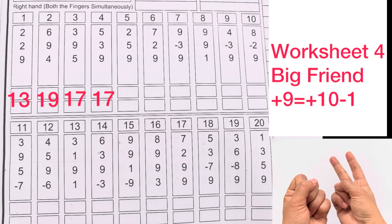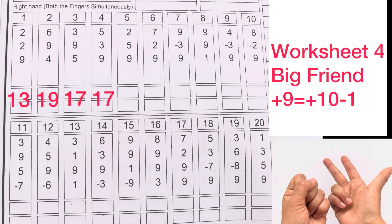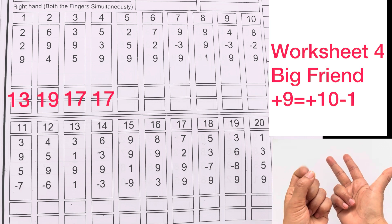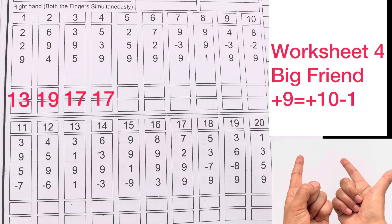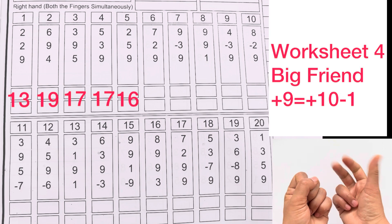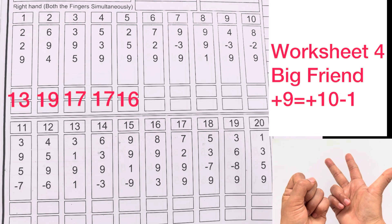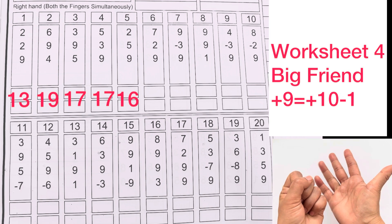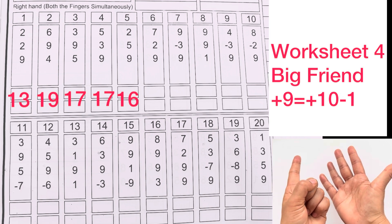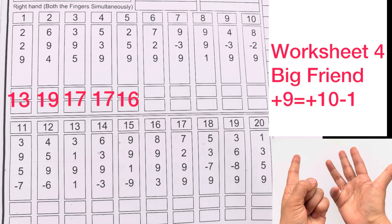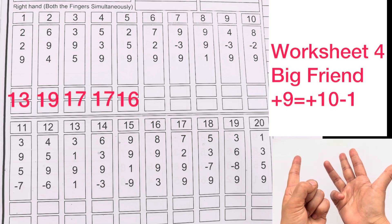2 plus 5 plus 9, plus 10 minus 1. Answer is 16. 7 plus 2 plus 9, plus 10 minus 1.